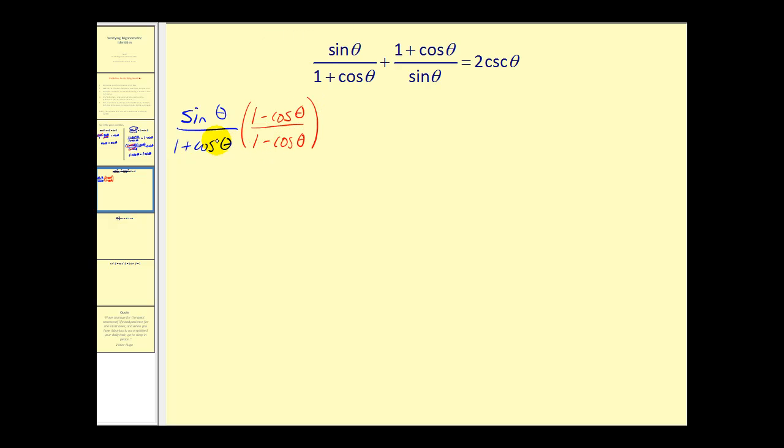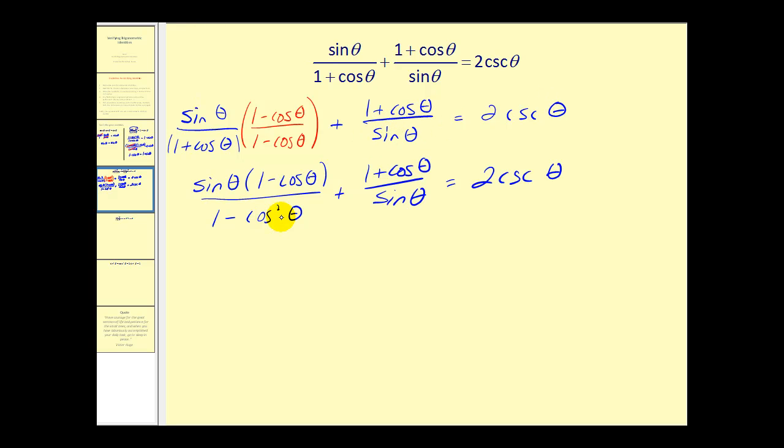And from here we'll rewrite the rest. So when we find this product, we'll leave the numerator in factored form. So we'll have sine theta times one minus cosine theta. And when we multiply the denominator out, when we FOIL this, we're going to have one minus cosine squared theta. Now we have one minus cosine squared theta in the denominator. And we can replace this with sine squared theta. So let's go ahead and do that.